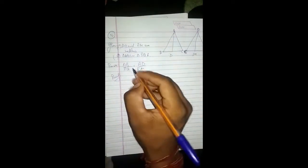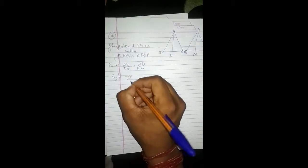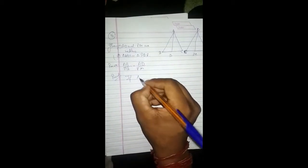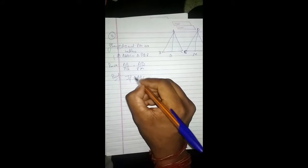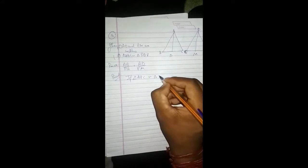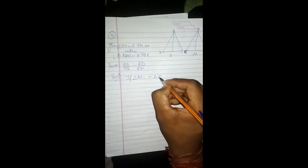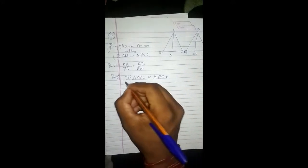So, if triangle ABC is congruent to triangle PQR, then